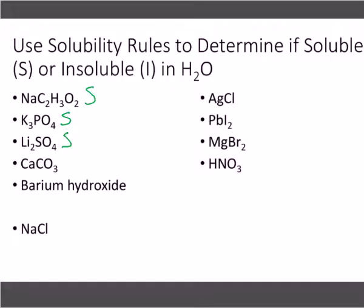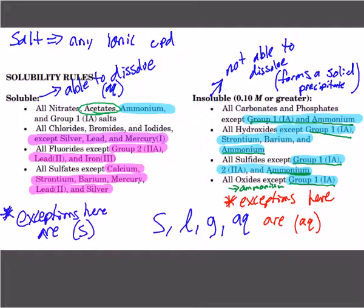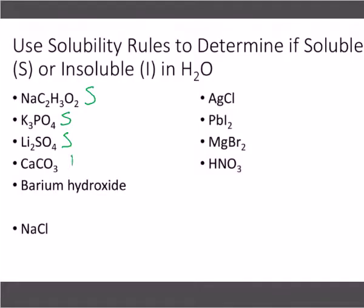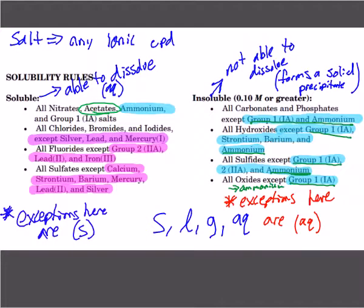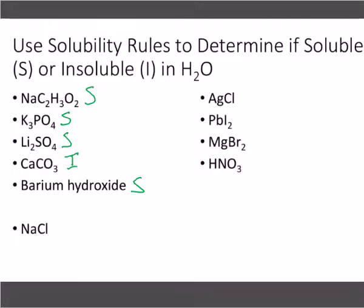Go through and do the rest using your solubility rules. All carbonates are insoluble unless it's with group 1 or ammonium — so that's an insoluble compound. Barium hydroxide: hydroxide is insoluble, except barium is one of the exceptions — so that is soluble. NaCl — you guys should know this one right off the bat — soluble, because we get salt and water.